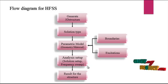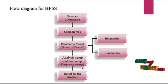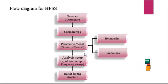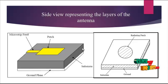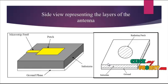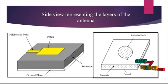Finally, calculating the analysis setup. In this analysis setup, we mention the frequencies — for whatever particular frequency you need. We are calculating the particular frequencies of the antenna, and then the result of the structure. The result will be calculated using these overall antennas. Here we are using the parametric model like the sandwich model. So the substrate is in the middle layer, the ground plane is the bottom layer, and the patch is in the top layer.